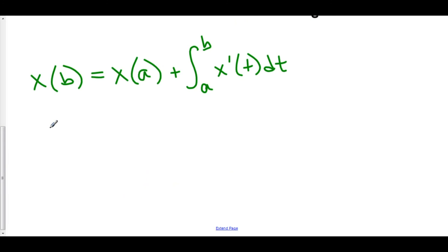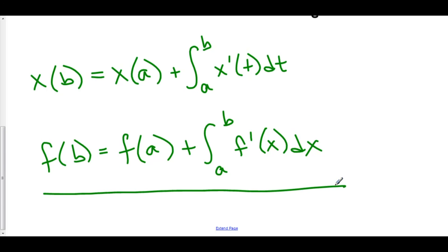To generalize more using better notation, f of B is equal to f of A, plus the net change from A to B in F, which is the integral of the derivative of F. And this right here is our formula for net change.